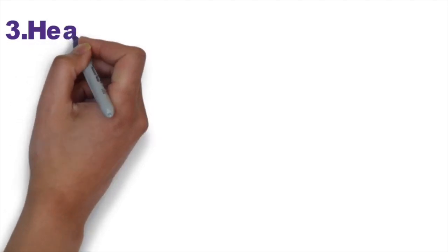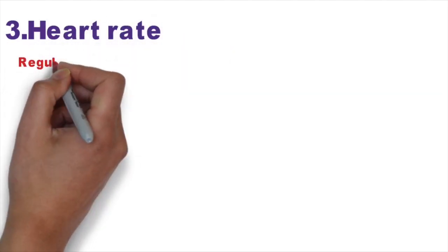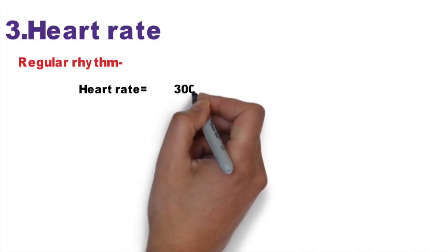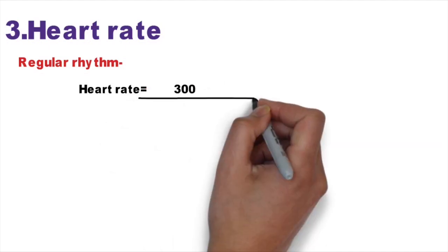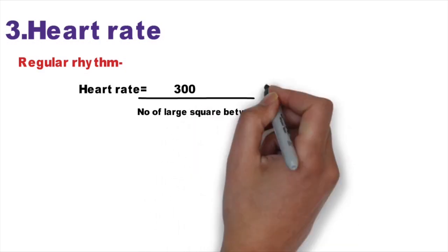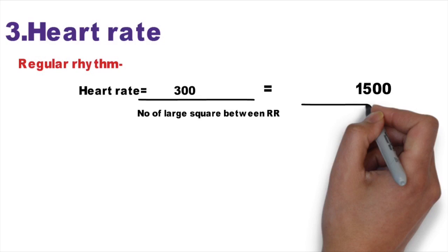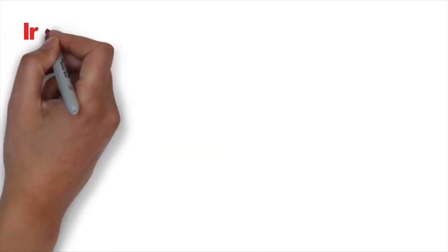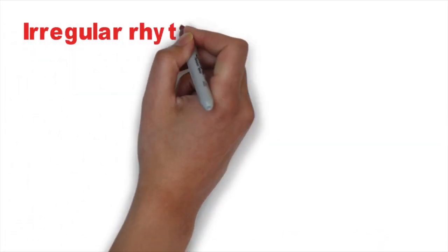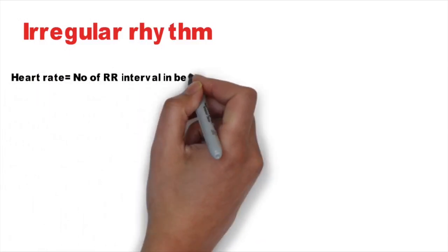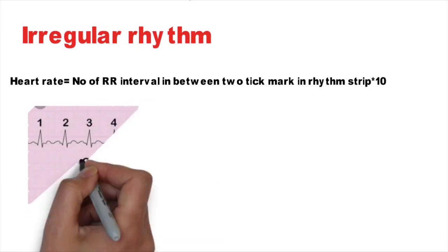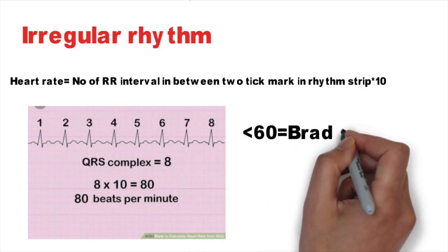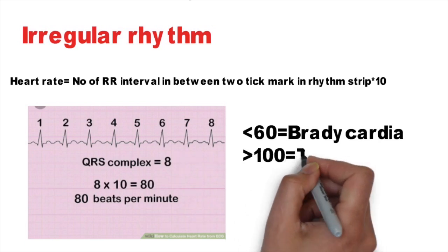Third, we check the heart rate. First, determine whether the rhythm is regular or irregular. In a regular rhythm, heart rate is calculated as 300 divided by the number of large squares between R and R, or 1500 divided by the number of small squares between two R waves. If the rhythm is irregular, count the number of R intervals between two tick marks on the rhythm strip and multiply by 10. A heart rate less than 60 is bradycardia; more than 100 is tachycardia.